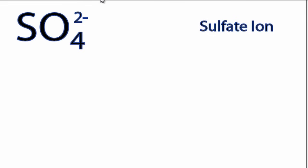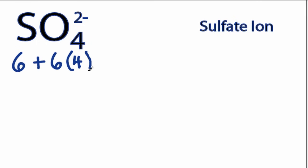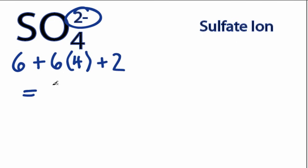Hi, this is Dr. B. Let's do the SO4 2- Lewis structure for the sulfate ion. On the periodic table, sulfur has 6 valence electrons. Oxygen also has 6. We have 4 oxygens, multiplied by 4, and these 2 valence electrons up here, we need to add those as well. That gives us a total of 32 valence electrons.